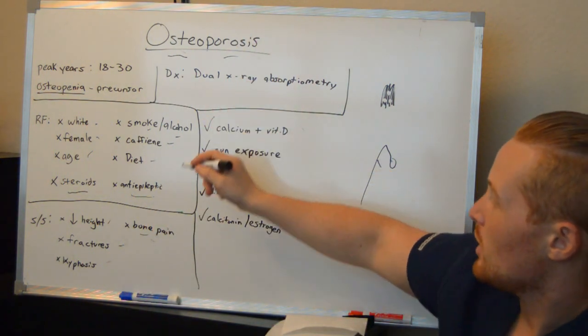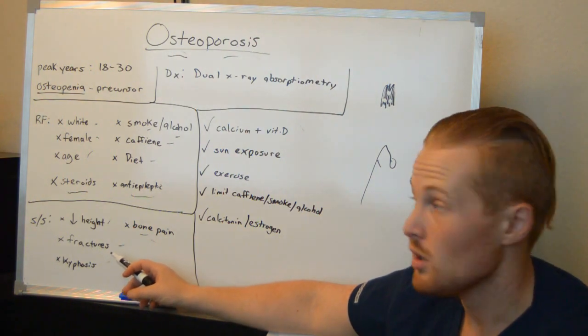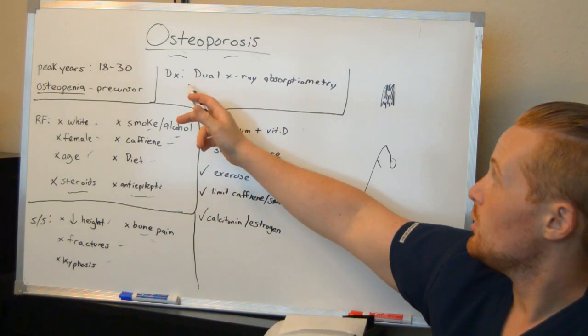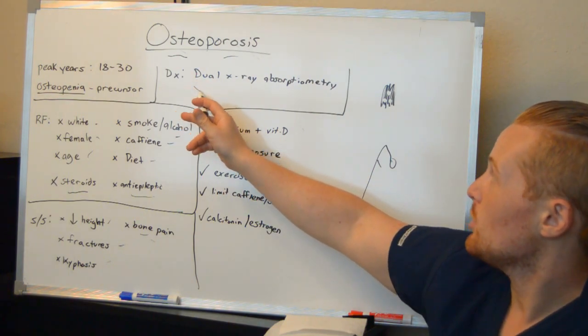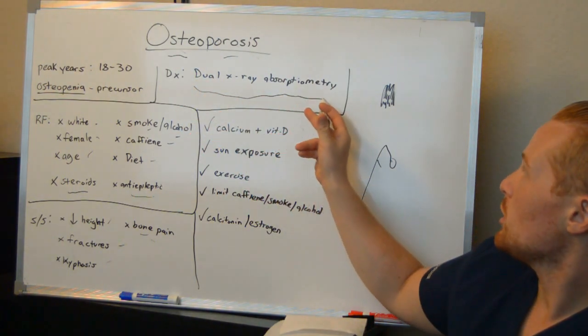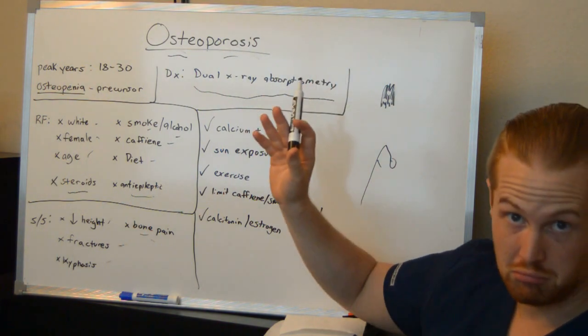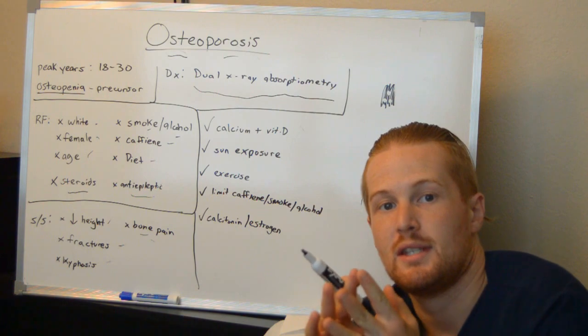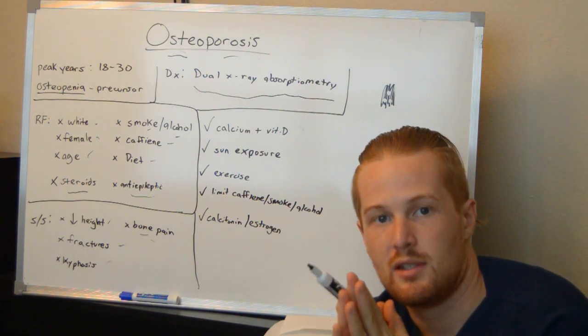So diagnosis. They notice you have lots of fractures and you have a lot of risk factors. And so what they can do to see how bad it is is they'll do a dual x-ray absorptiometry. And what this does is they can do x-rays on the bones to see how much bone density is in there and how much is porous because of osteoporosis.